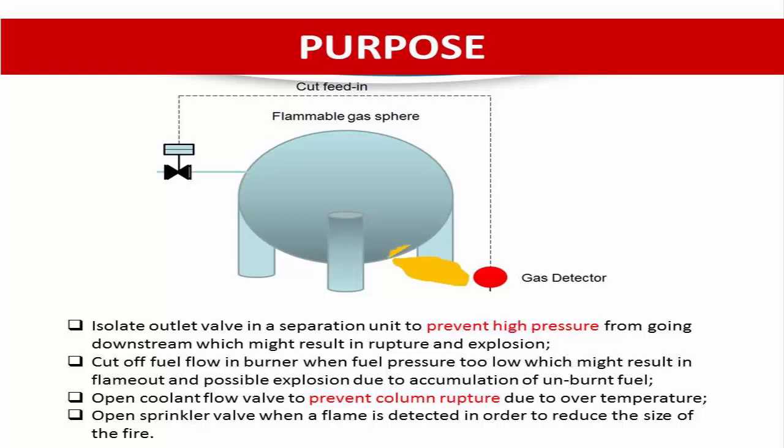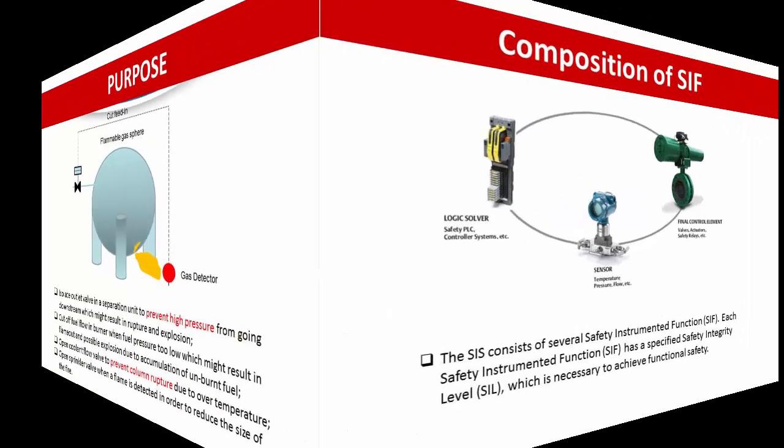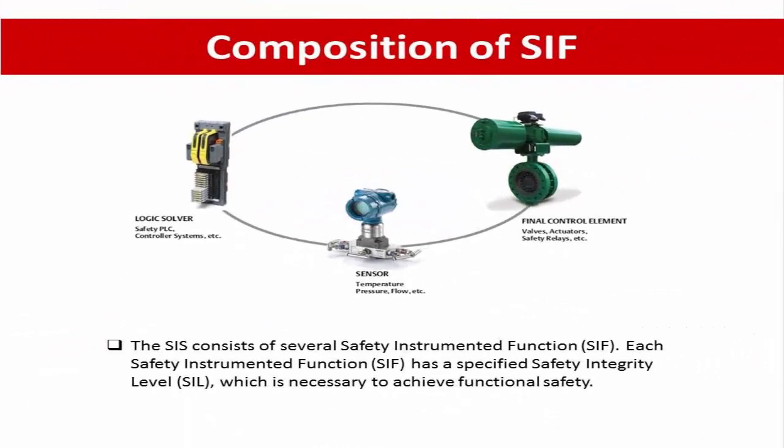Additional examples include opening the coolant flow valve to prevent column rupture due to over-temperature, and opening the sprinkler valve when a flame is detected in order to reduce the size of the fire. These illustrate how safety instrumented functions protect the process.